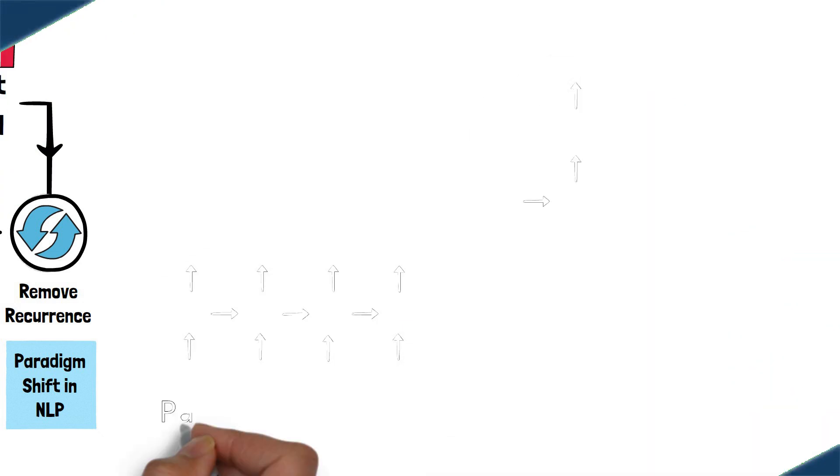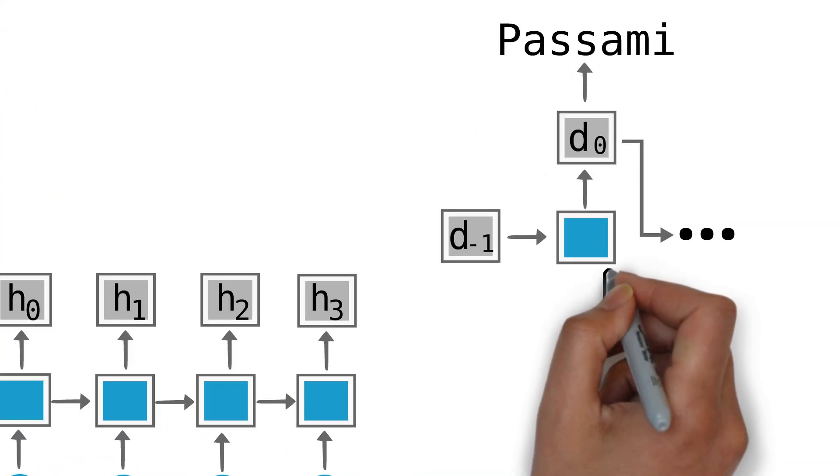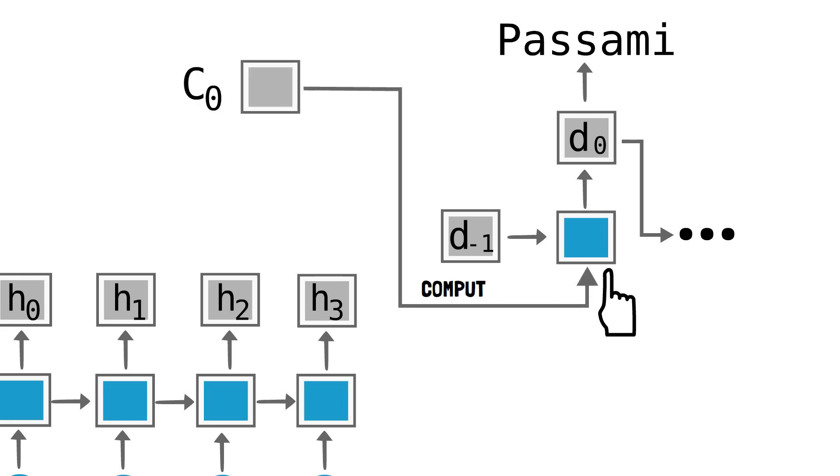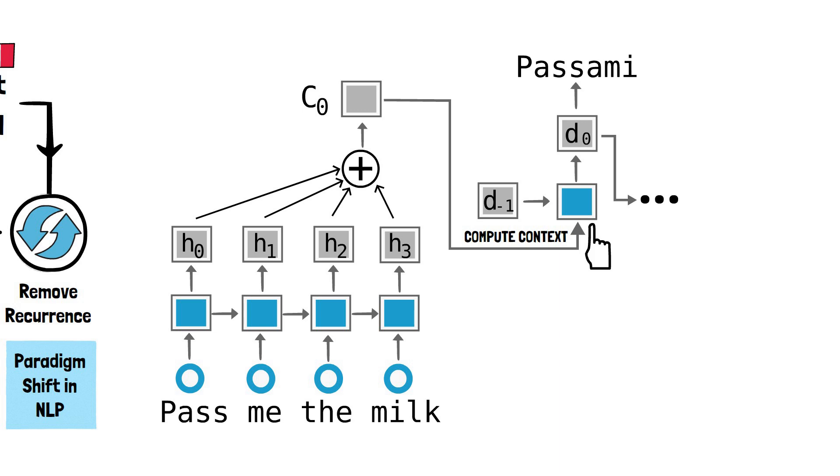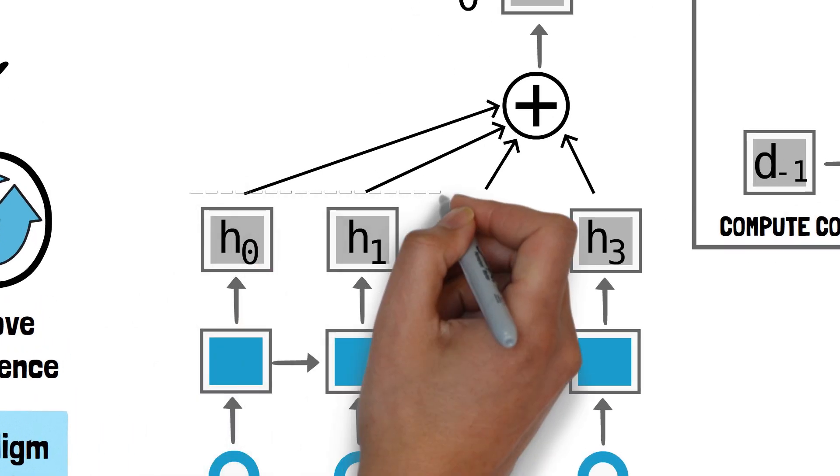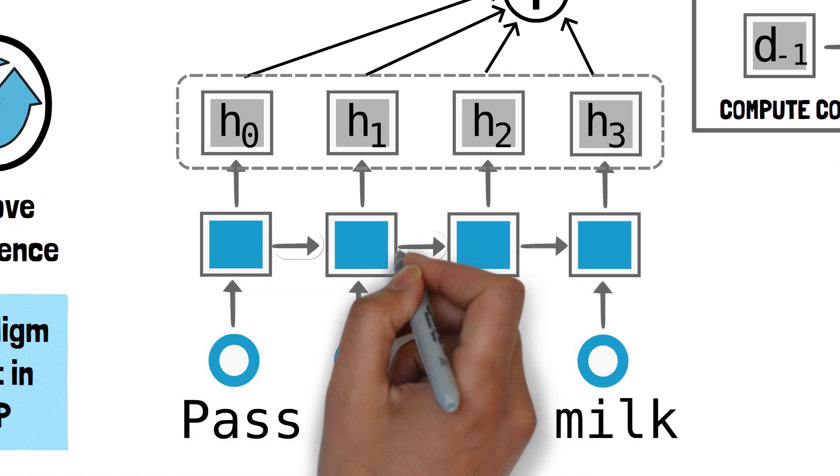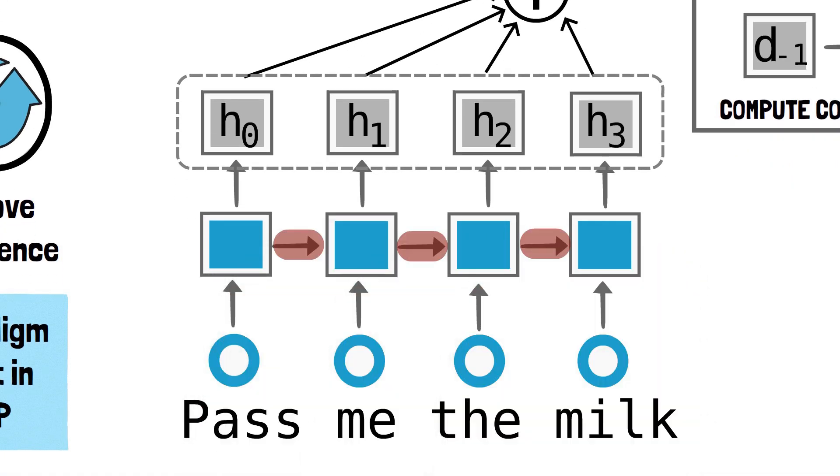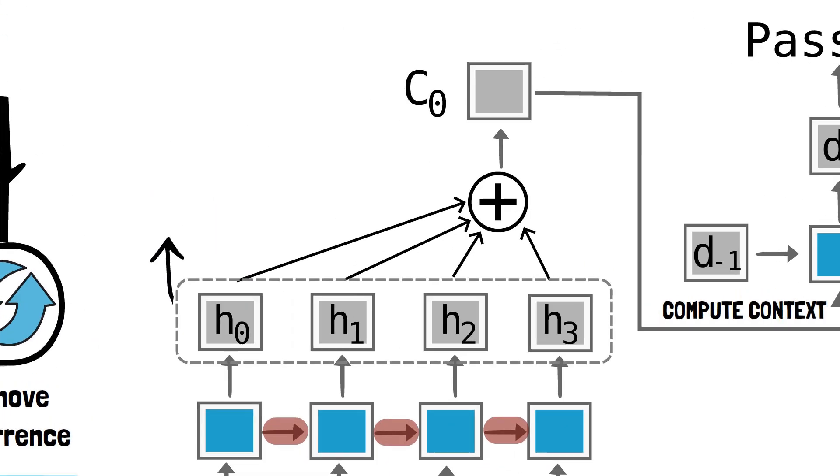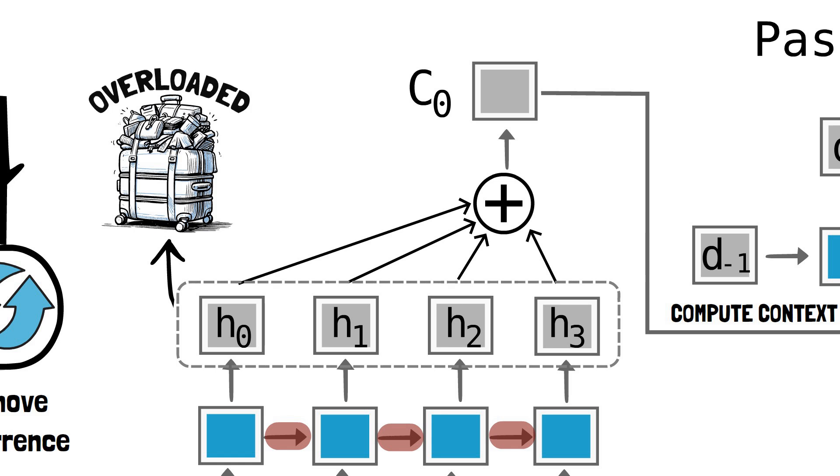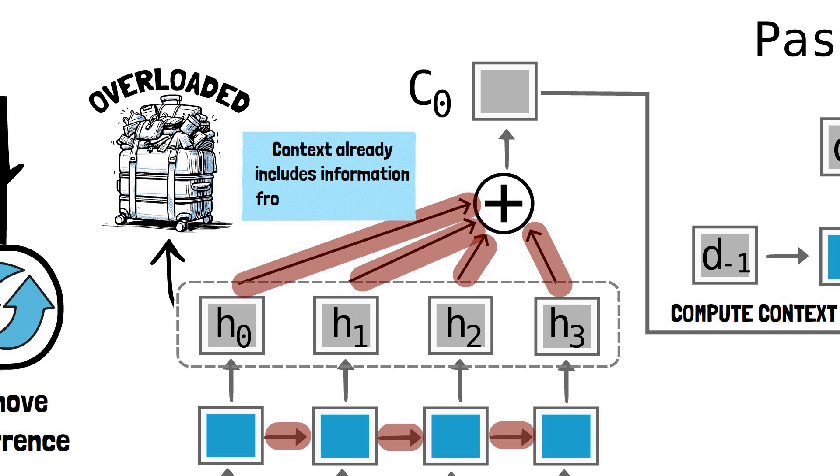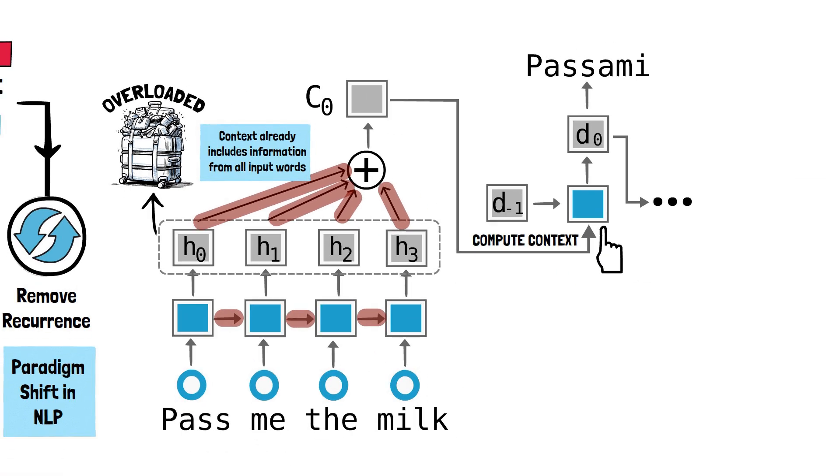The key consideration at the basis of transformers is that the introduction of attention in the encoder-decoder network makes recurrence redundant. Let's see why. As we saw in the previous episode, for each word the decoder is translating, the attention mechanism computes a context from the hidden representations of all input words. At the same time, each of these hidden representations of the input words is influenced by all preceding words because of the recurrence mechanism. This means that these hidden representations are effectively overloaded, as the context calculated via the attention mechanism already includes information from all of the input words, making the additional layer of recurrence superfluous.